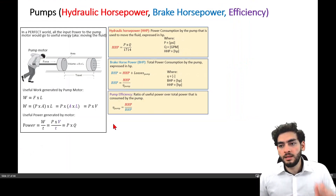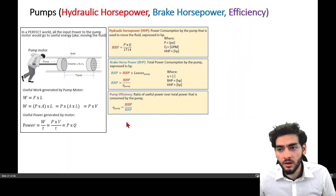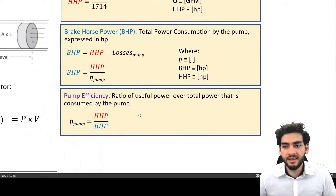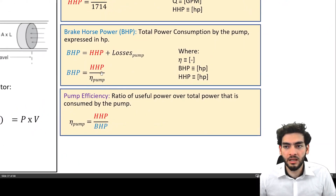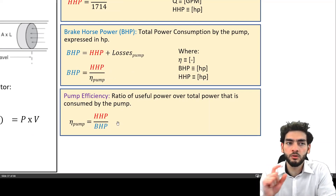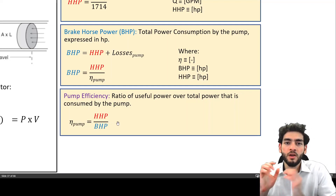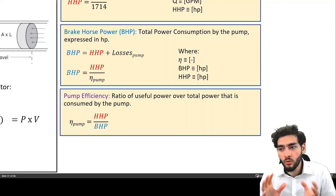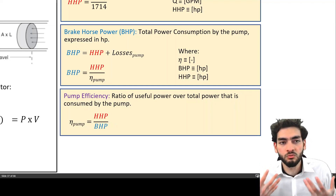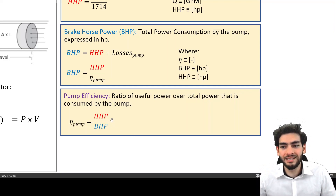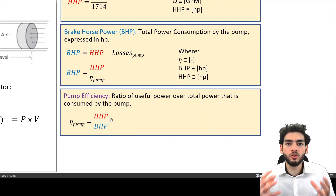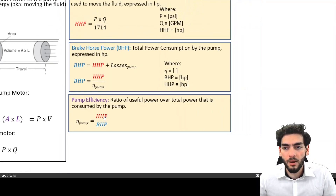The next parameter is pump efficiency, which is what appears in the brake horsepower equation. It is the ratio of useful power over total power consumed by the pump — essentially hydraulic horsepower divided by brake horsepower.